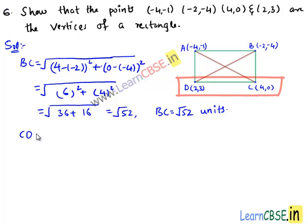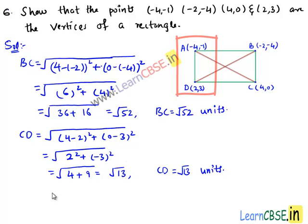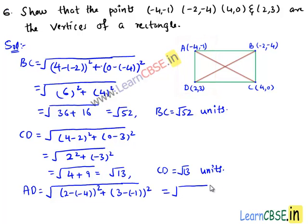Now let us find the length CD and AD. CD equals the square root of (x₂ - x₁)² which is (4 - 2)² plus (y₂ - y₁)² that is (0 - 3)², which equals the square root of 2² plus (-3)² equal to √13. AD equals the square root of (2 - 4)² plus (3 - 1)² which is the square root of 6² plus 4², equal to the square root of 36 plus 16, which is equal to √52. Hence we got the length AD as √52 units.